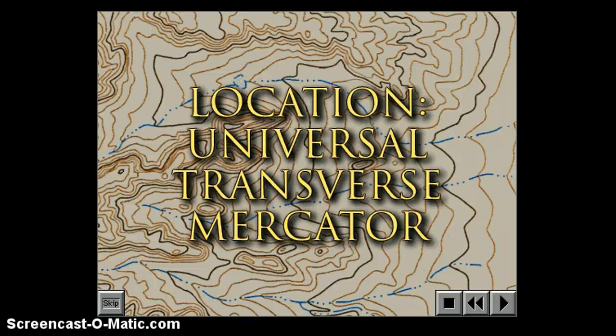The universal transverse mercator is an entirely different and third type of system for finding location on the surface of the earth. We talked about latitude and longitude, that's the most common one. I just discussed the public land survey, which is used a lot for property deeds and taxes. We're not going to worry about it very much in class.